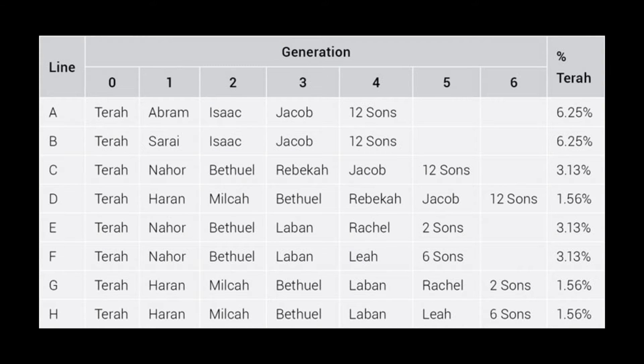Now here's where it gets interesting. You got half your genome from mom and half from dad — 50% from each parent. That means you're 25% identical to your grandparents, 12.5% to your great-grandparents, about 6% to your great-great-grandparents, and so on. If you follow the longest line up to Terah, those 12 brothers should be about 3% similar to him. But they're not, because they inherited Terah's DNA through multiple different lines. Going Terah → Abraham → Isaac → Jacob → 12 sons, they would have inherited about 6.25% of their DNA from Terah.